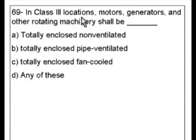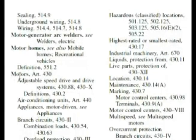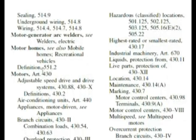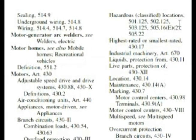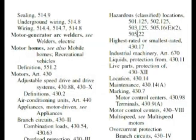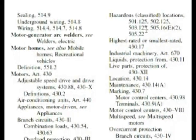Now we could go through the class 2 locations and start looking there, but those get complicated. I like to go and look for something like motors and see if I can find something that deals with hazardous locations. We're at the index on motors and it's article 430. Fortunately for us, hazardous locations is right at the top. Our question is asking for class 3 locations — 501.125, 502.125, 503.125. So class 3 would be 503.125.